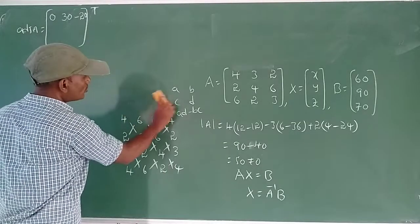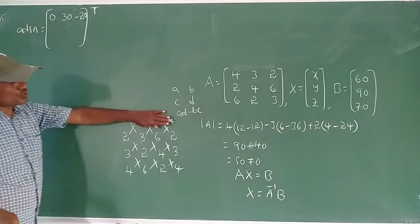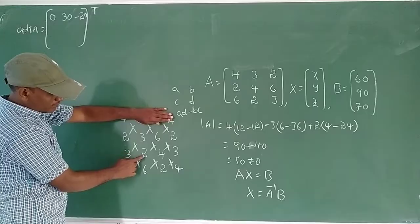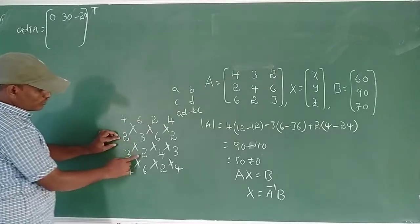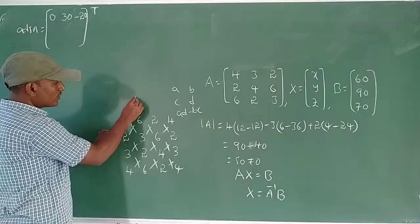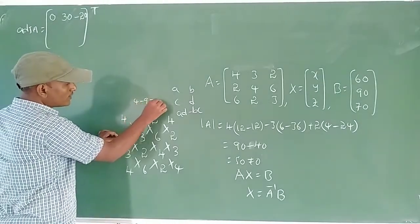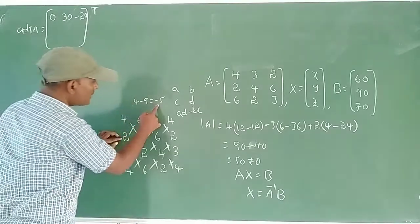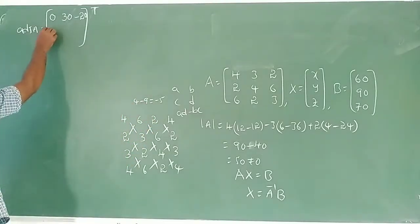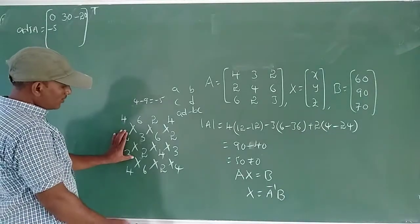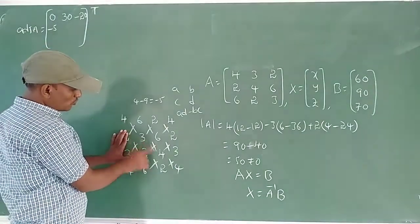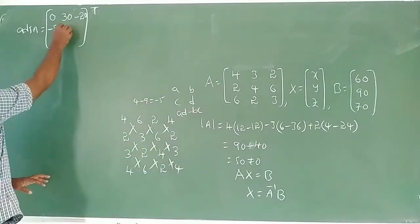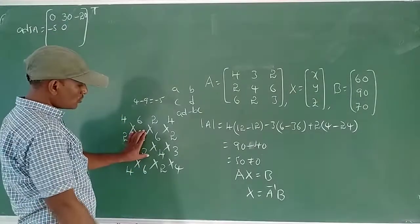Cofactor of element (2,1): close first row, remaining middle two lines. Minor gives 3×3 − 2×4 = 9 − 8 = ... value is −5. Cofactor of element (2,2): minor [4,2; 6,3], value = 4×3 − 2×6 = 12 − 12 = 0. Cofactor of element (2,3): minor [4,3; 6,2], value = 4×2 − 3×6 = 8 − 18 = −10, with minus sign = 10.